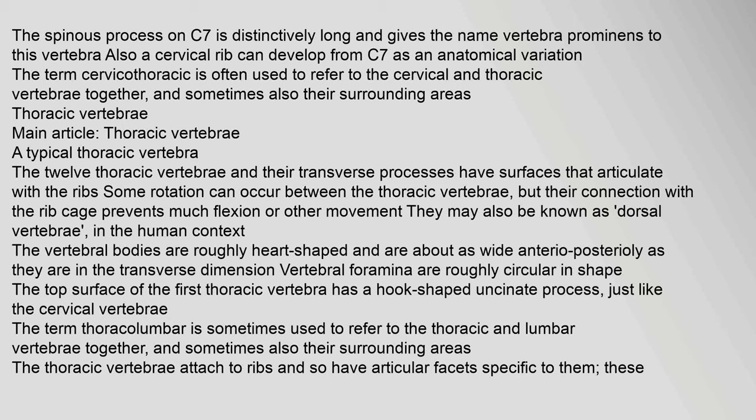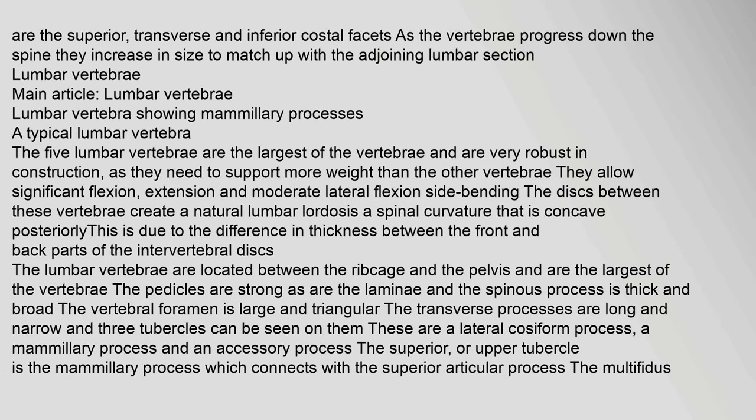The 12 thoracic vertebrae and their transverse processes have surfaces that articulate with the rib. Some rotation can occur between the thoracic vertebrae, but their connection with the rib cage prevents much flexion or other movement. They may also be known as dorsal vertebrae. In the human context, the vertebral bodies are roughly heart-shaped and are about as wide anterior-posteriorly as they are in the transverse dimension. Vertebral foramina are roughly circular in shape. The top surface of the first thoracic vertebra has a hook-shaped uncinate process, just like the cervical vertebrae. The thoracic vertebrae attach to ribs and have articular facets specific to them — the superior, transverse, and inferior costal facets. As the vertebrae progress down the spine they increase in size to match the adjoining lumbar section.